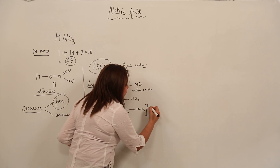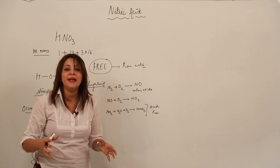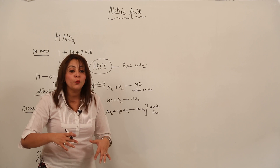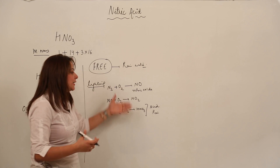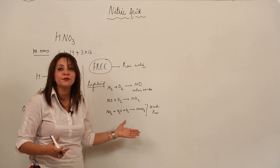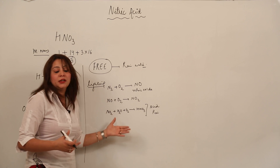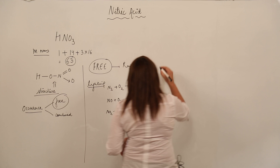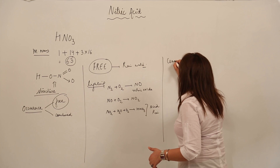This is how HNO3 occurs in free form in rain water. This is also a constituent of acid rain, and you are aware of the harmful effects of acid rain and how it is formed.